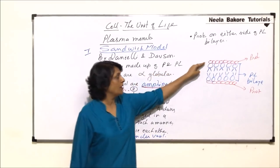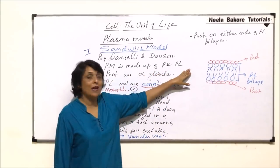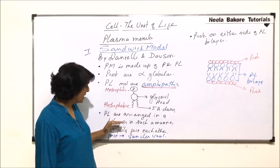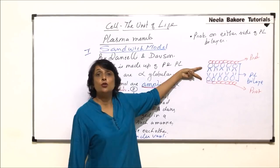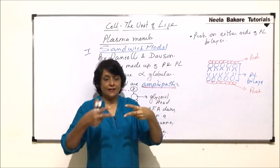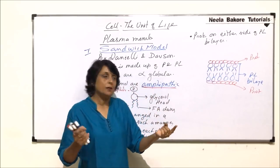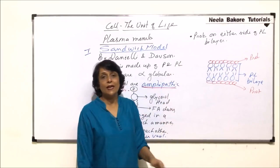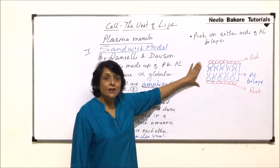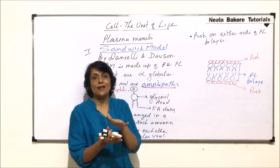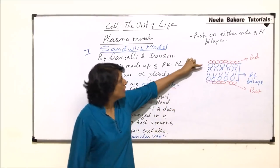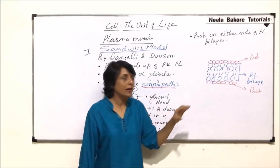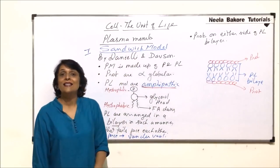Let us verify: it is made up of proteins and phospholipids; proteins are alpha globular so we made them spherical; phospholipid molecules are amphipathic; phospholipids are arranged in a bilayer with tails facing each other and heads away; Van der Waals force holds them together; proteins are on either side. Now does it look like a sandwich? When we make a sandwich there are two slices of bread with a thick layer of jam in between — here there is one layer of protein, another layer of protein, and the phospholipid bilayer placed in between. Based on this structure the model was called the sandwich model.